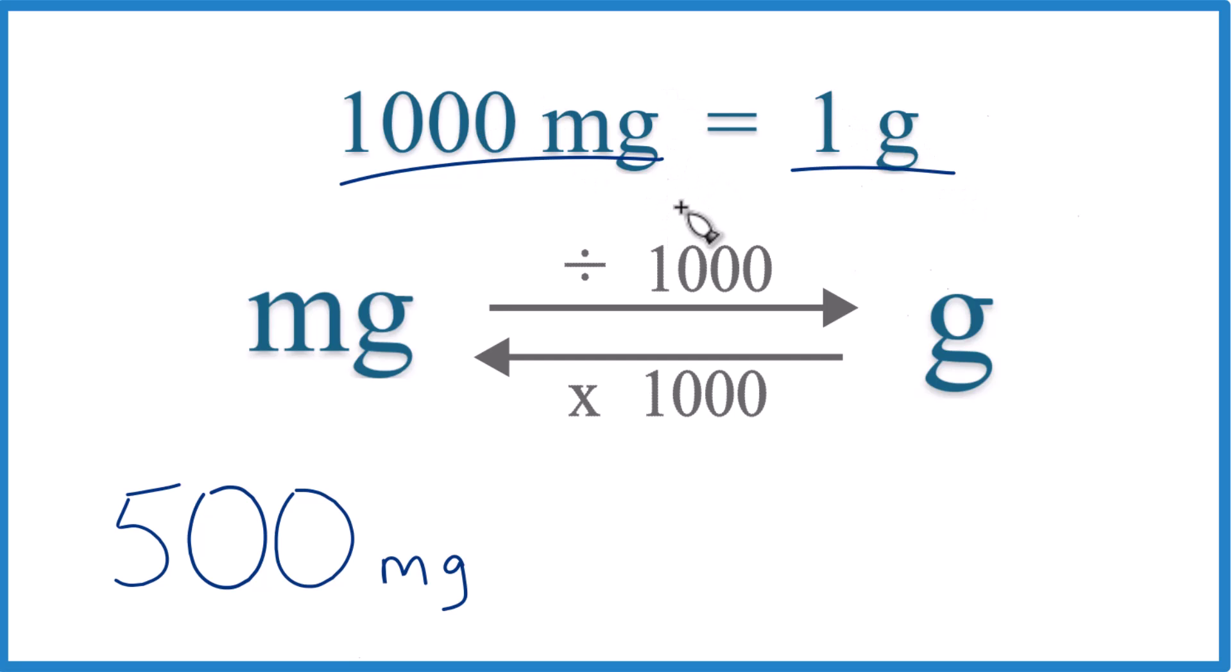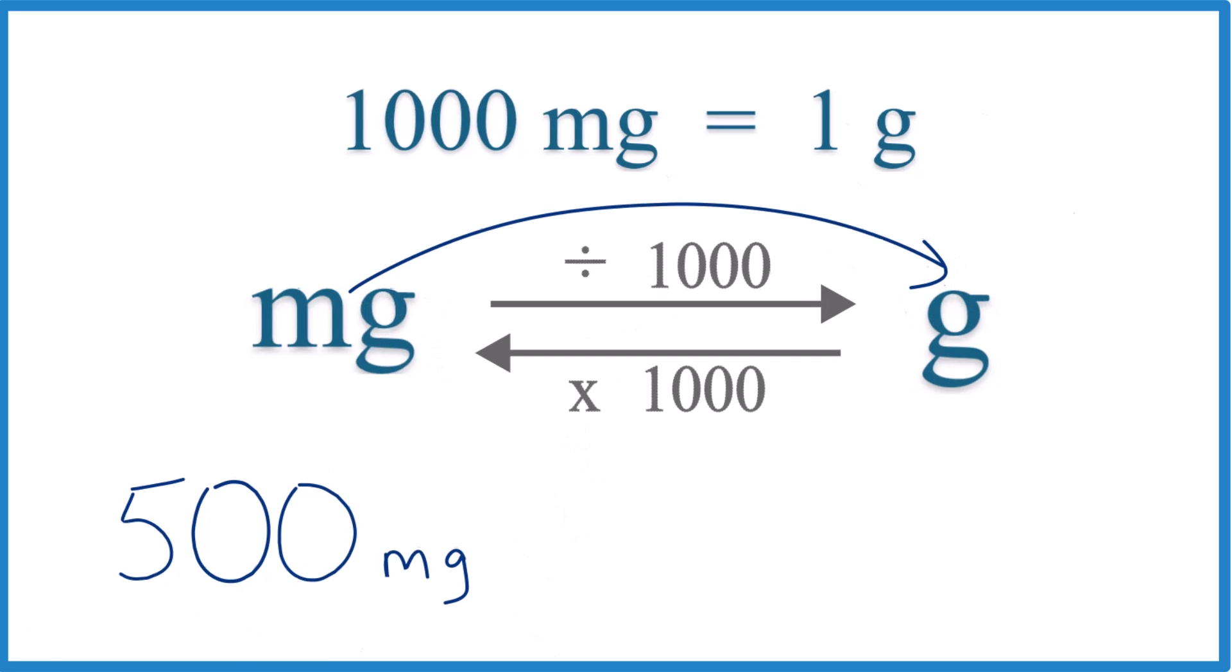That's our conversion factor. And we need that when we go from milligrams to grams or grams to milligrams. In this case, we have 500 milligrams. So we're going milligrams to grams. We divide by 1,000,